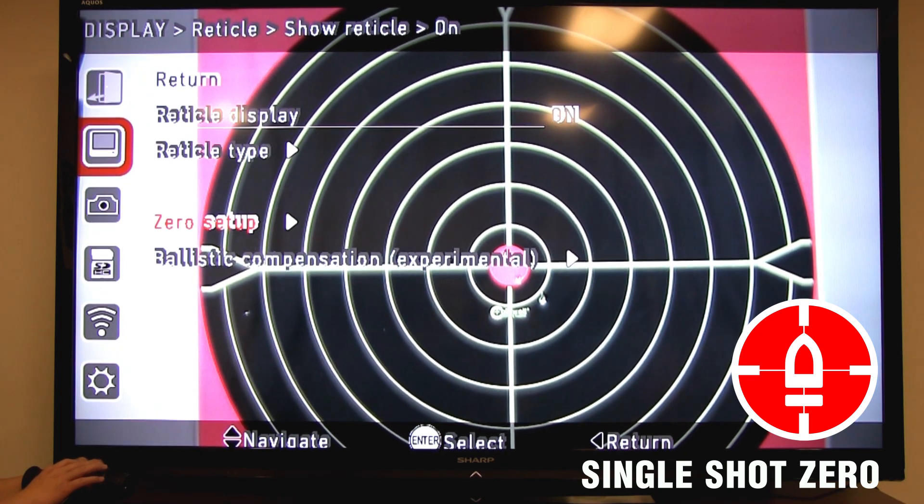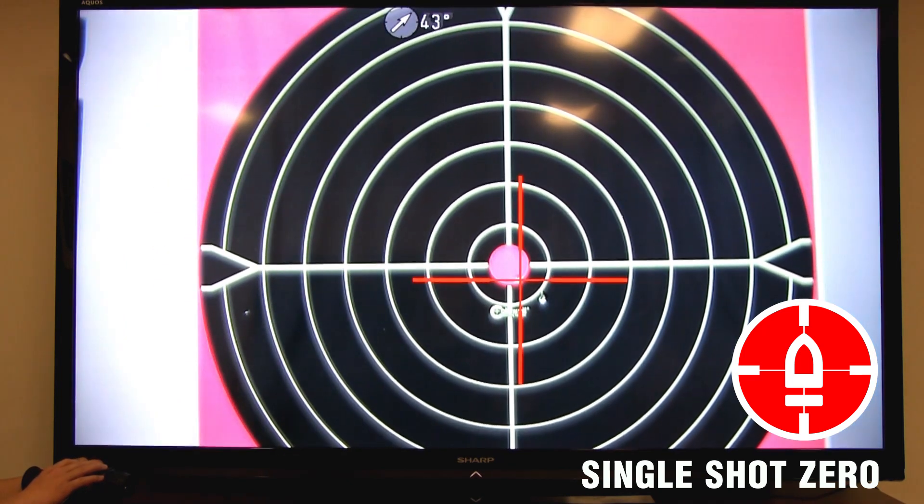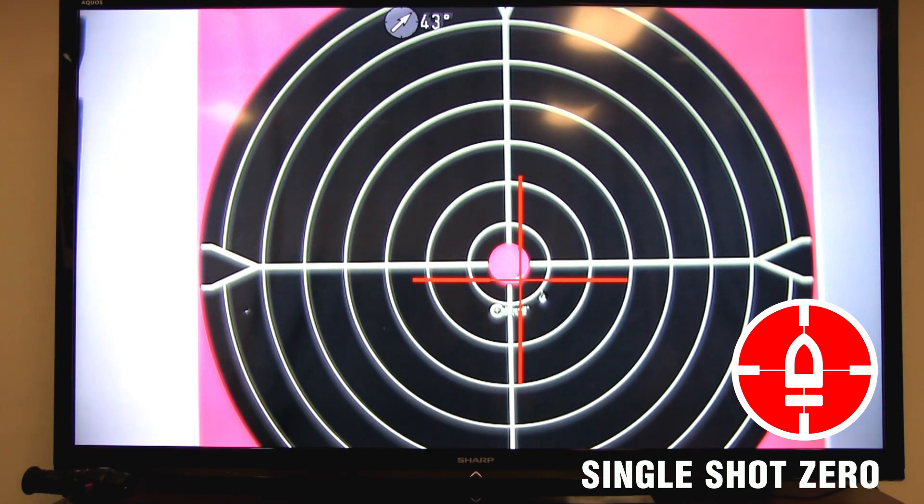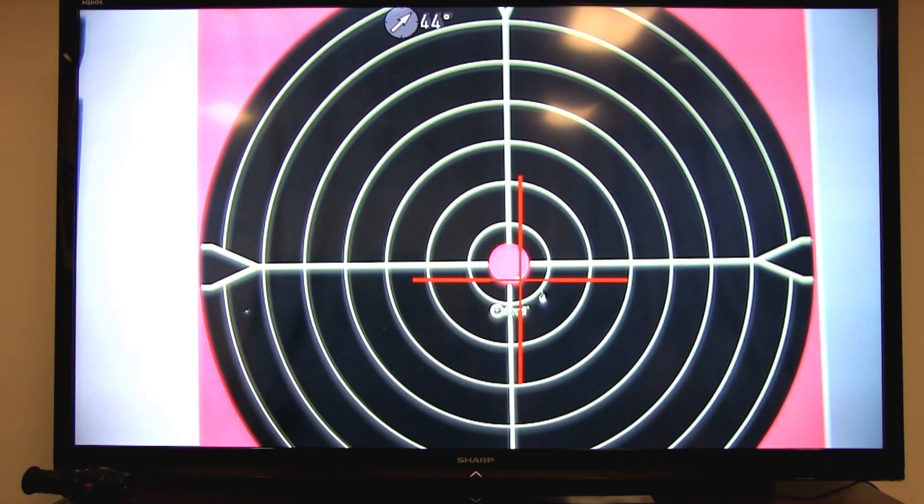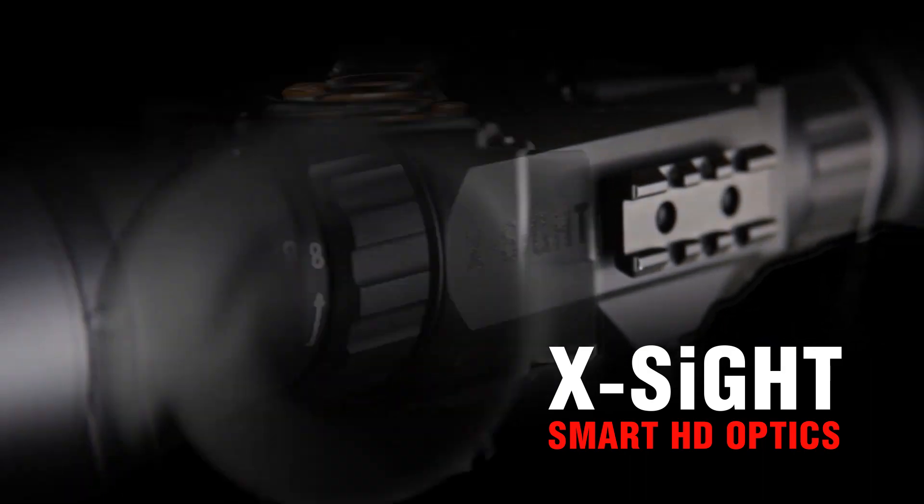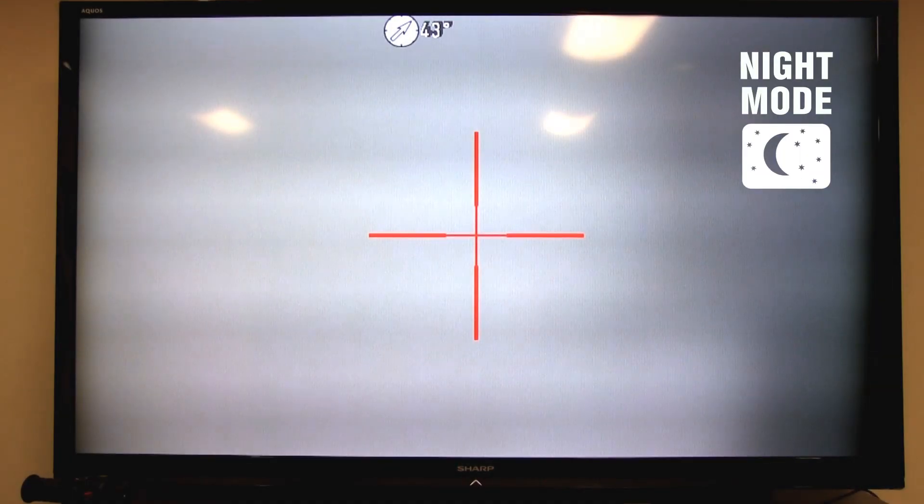Press the left arrow to back out of the menu. One of the coolest features about the X-Sight is that it has night vision capability. Being that it's a day and night scope, you can use it 24-7.